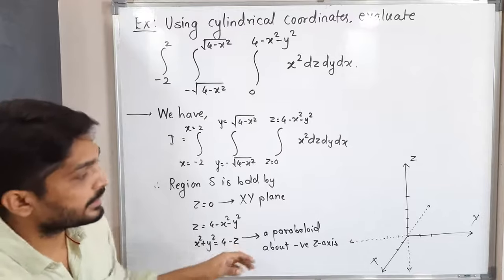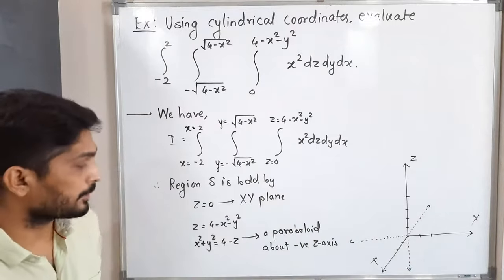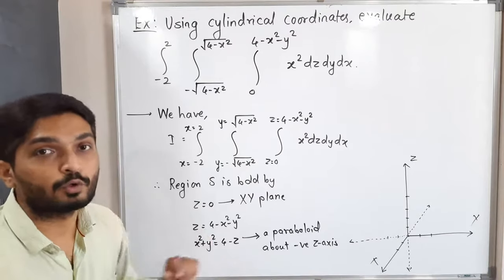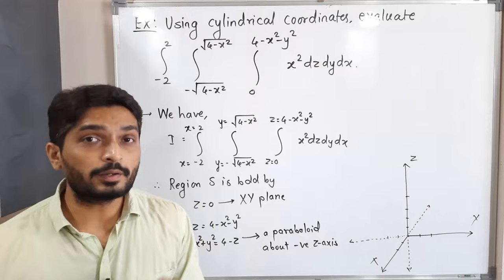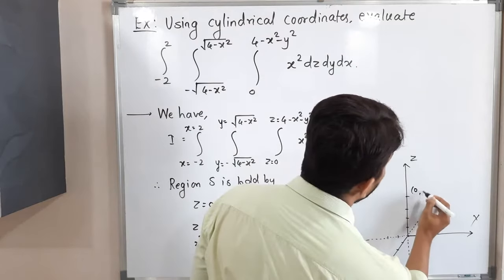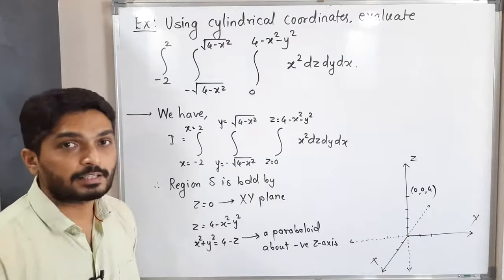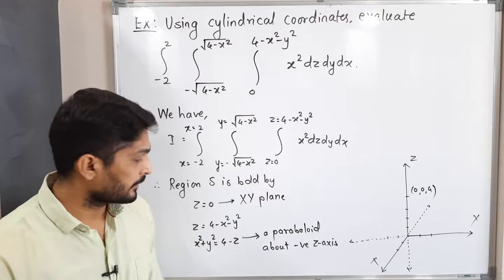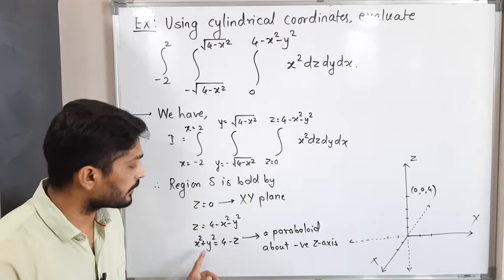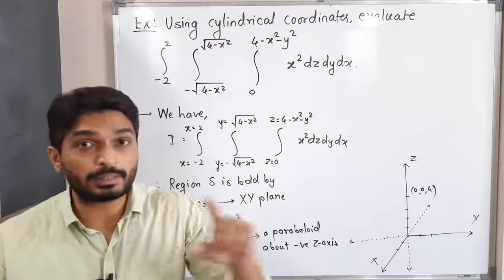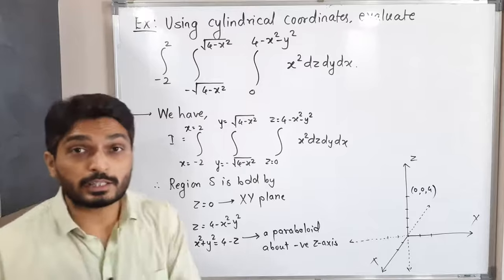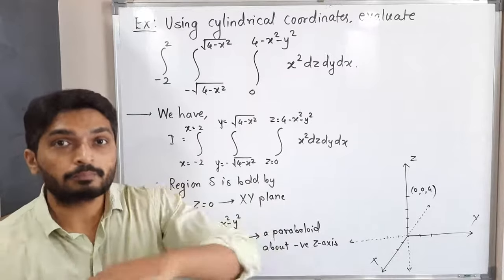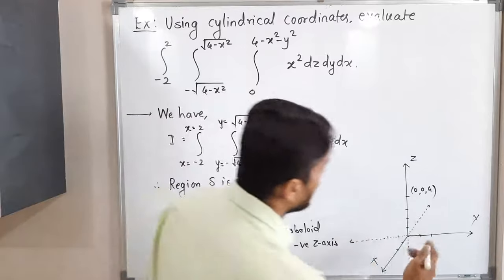Since z has a minus sign, the paraboloid opens in the downward direction. If we put x = 0 and y = 0, we get z = 4, so the paraboloid cuts the z-axis at point (0, 0, 4). If we put z = 0, we get x² + y² = 4, which is the equation of a circle in the xy-plane with center (0,0) and radius 2.